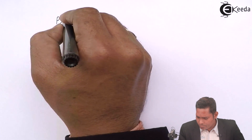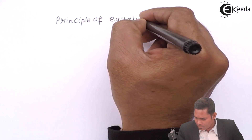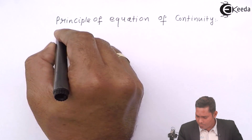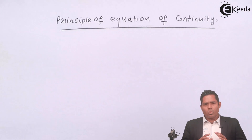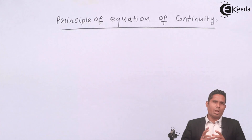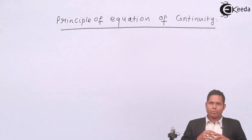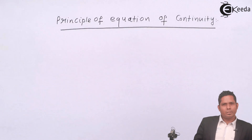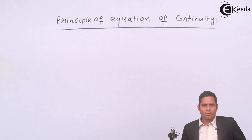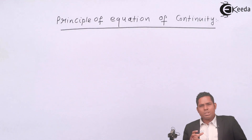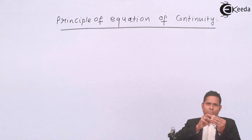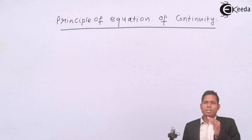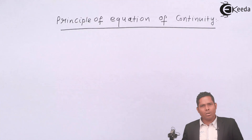The principle of equation of continuity: when liquid flows in a tube in a streamlined or laminar flow, the principle of continuity says that whatever amount of liquid is flowing in must come out. Whatever goes in must come out. This is the basic meaning of the principle of continuity.